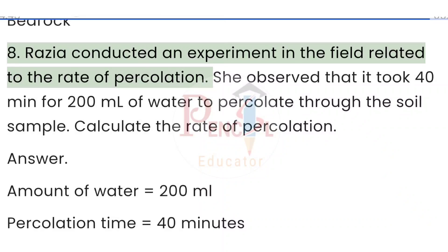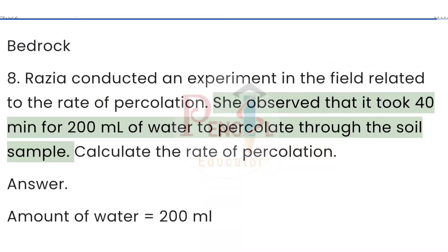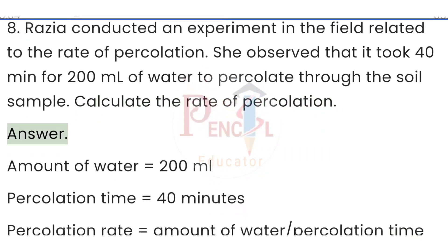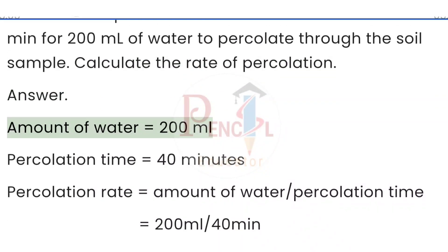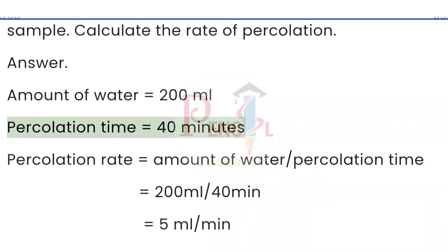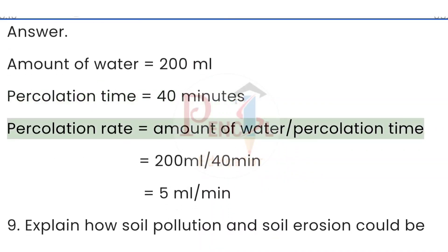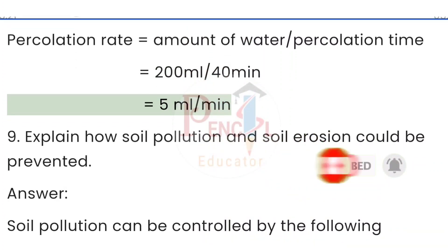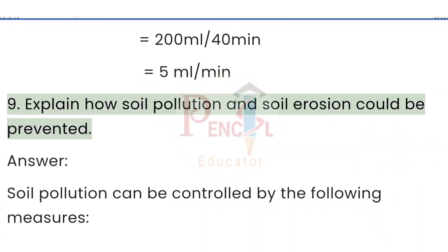Question 8: Razia conducted an experiment related to the rate of percolation. She observed that it took 40 minutes for 200 milliliters of water to percolate through the soil sample. Calculate the rate of percolation. Answer: Amount of water = 200 mL, percolation time = 40 minutes. Percolation rate = amount of water ÷ percolation time = 200 mL ÷ 40 minutes = 5 milliliters per minute.